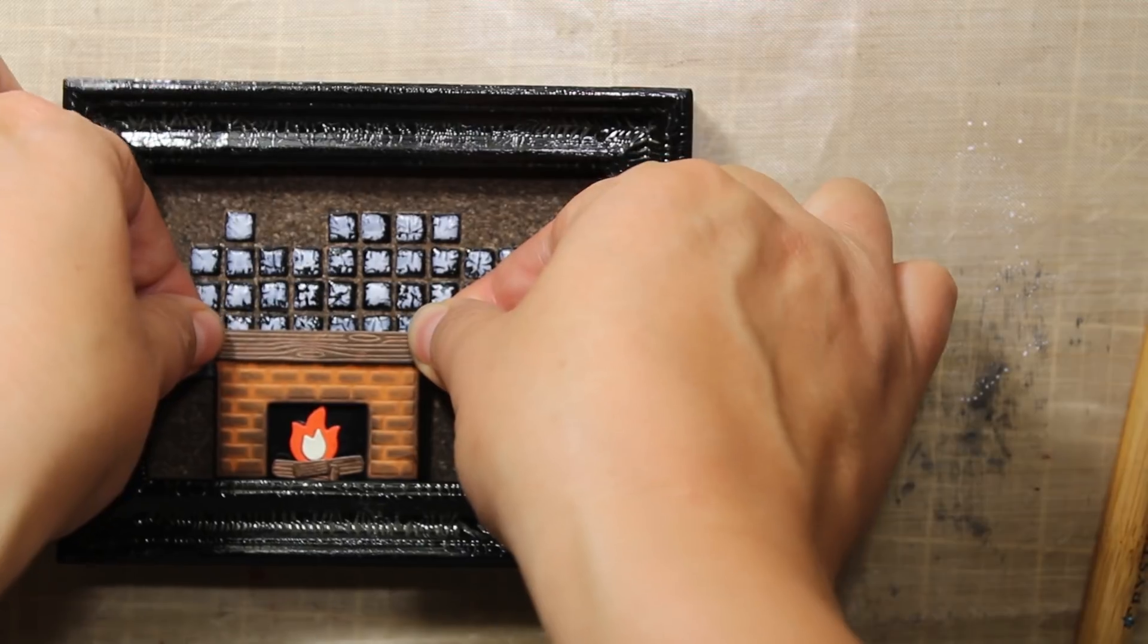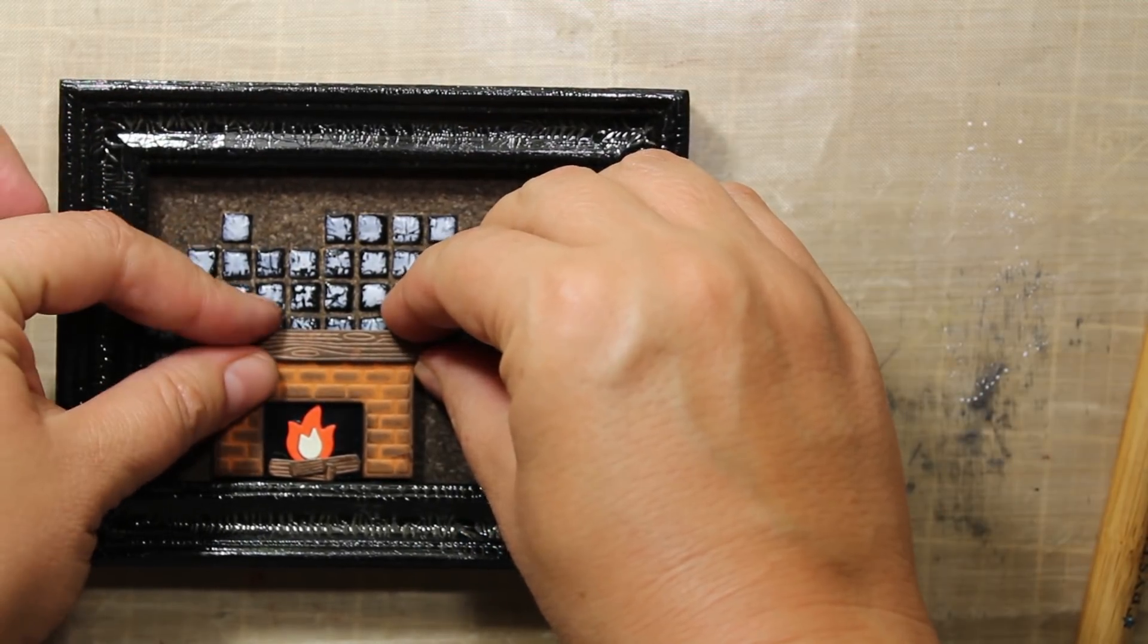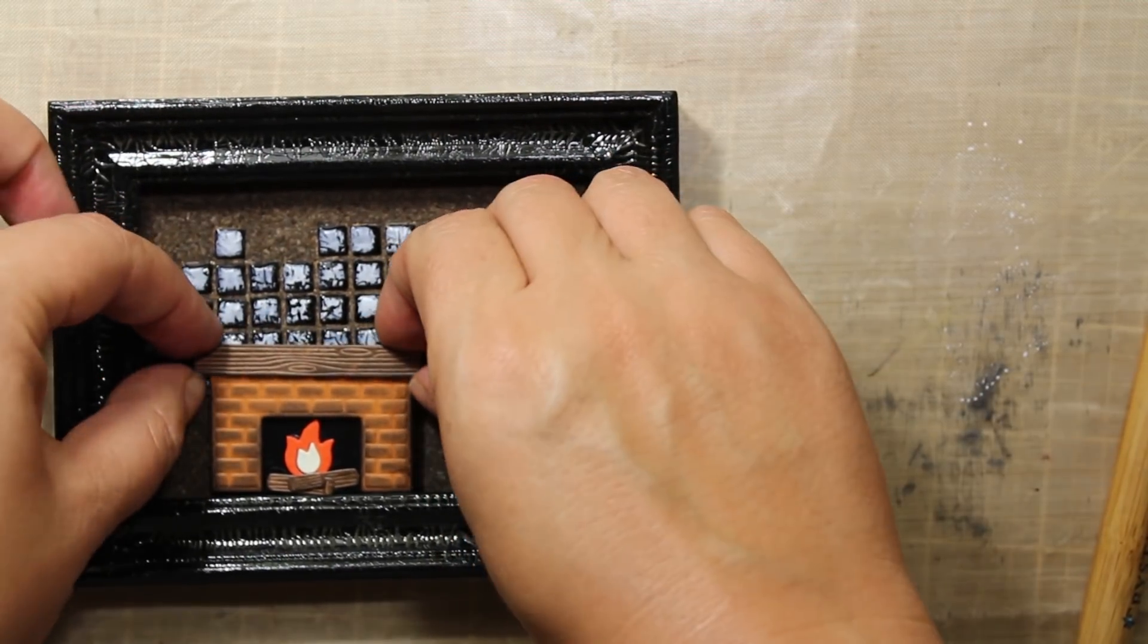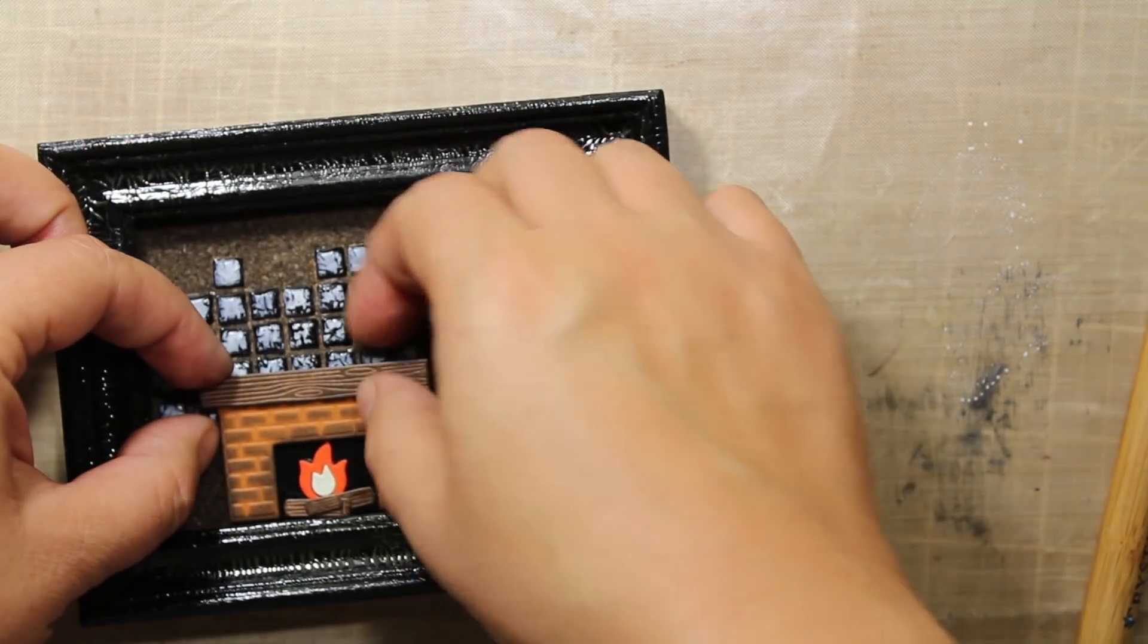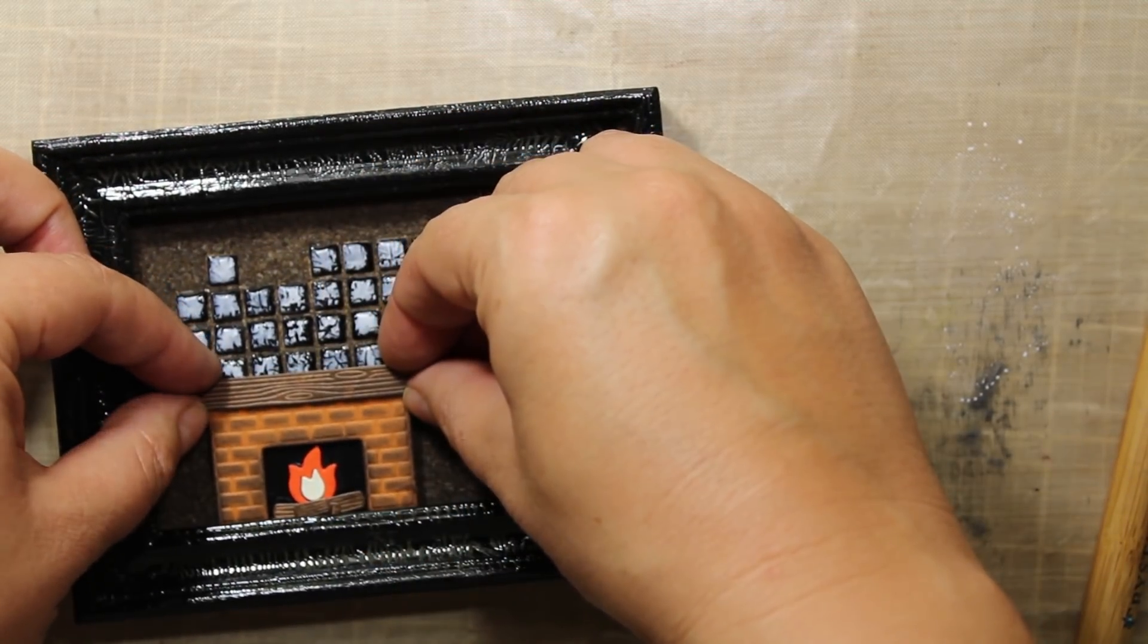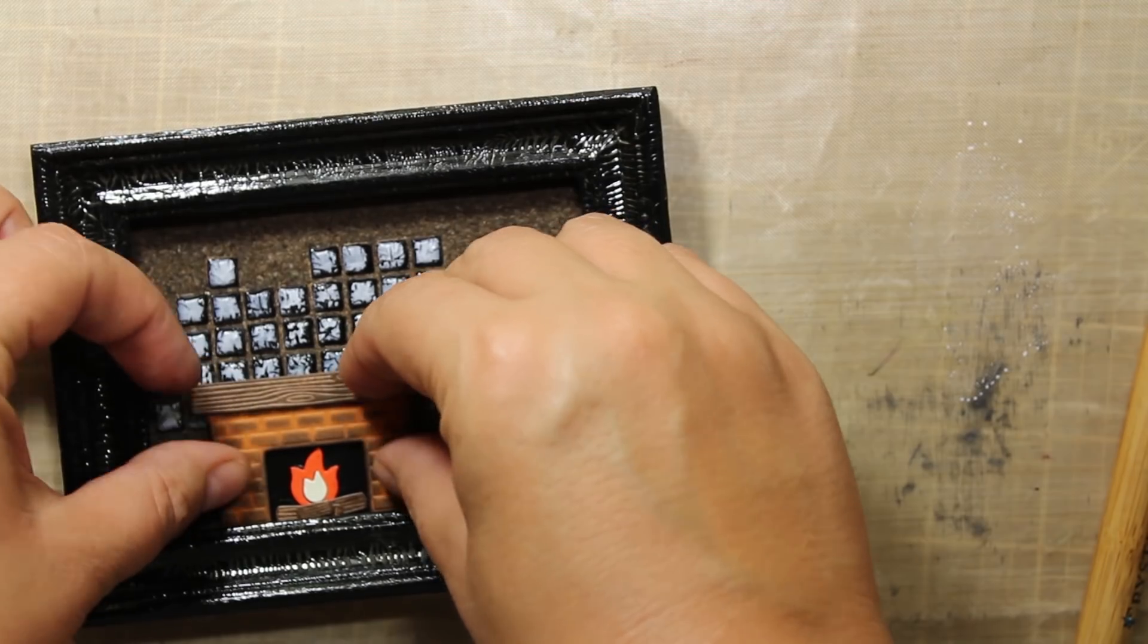I'm using foam squares again to place my fireplace into the frame. Then I'm also going to attach more firewood with the same foam squares.